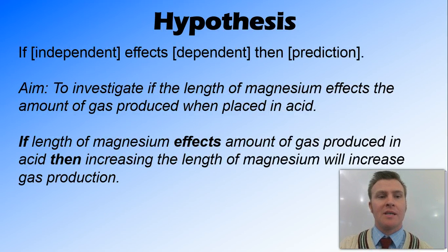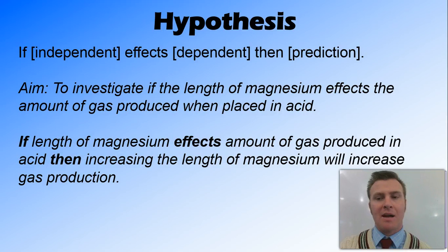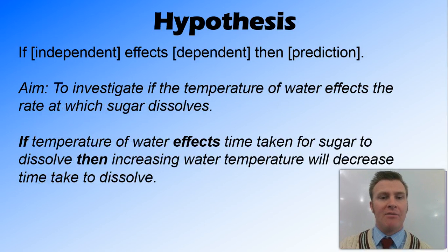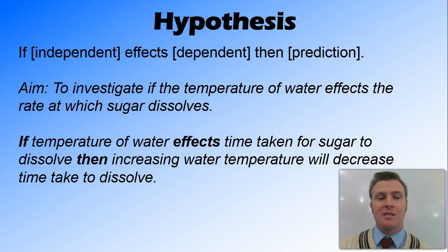Looking at our two examples: for the magnesium experiment - if the length of magnesium (independent variable) affects the amount of gas produced in acid (dependent variable), then increasing the length of magnesium will increase gas production. For the sugar experiment - if the temperature of water (independent) affects the time taken for sugar to dissolve (dependent), then increasing water temperature will decrease the time taken to dissolve.